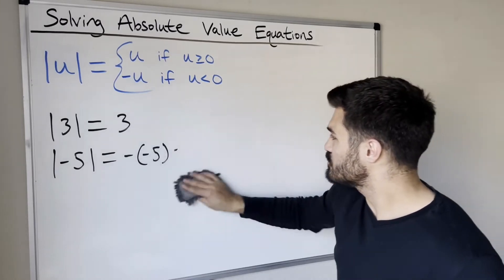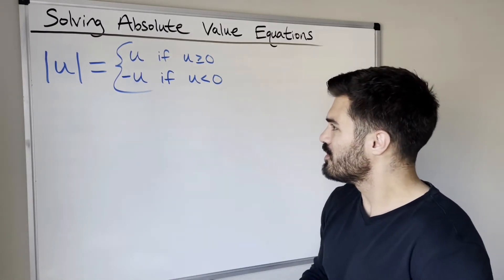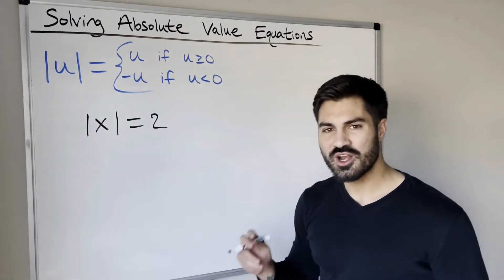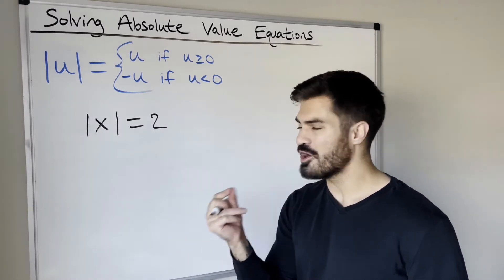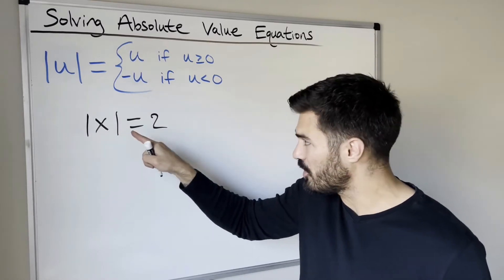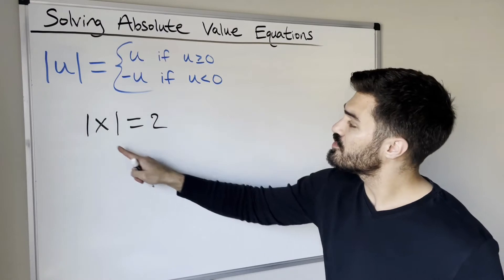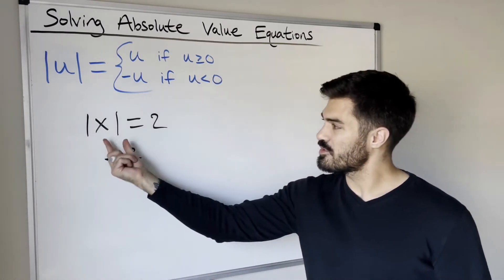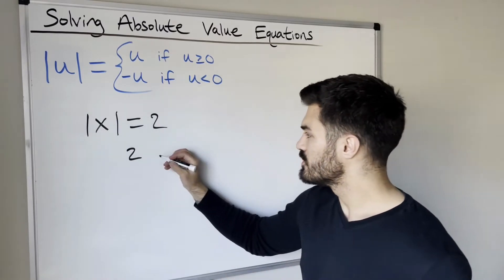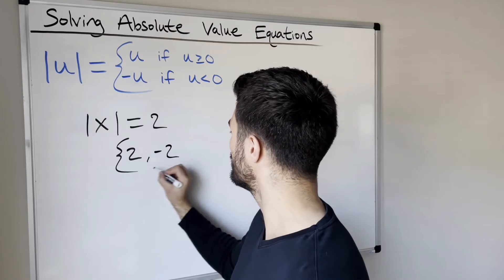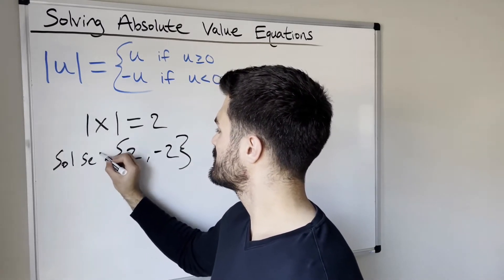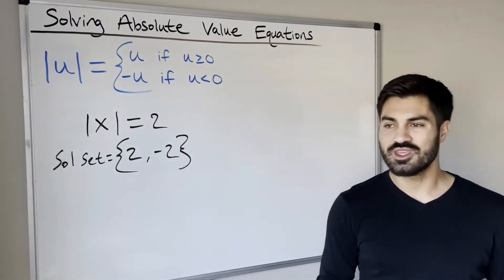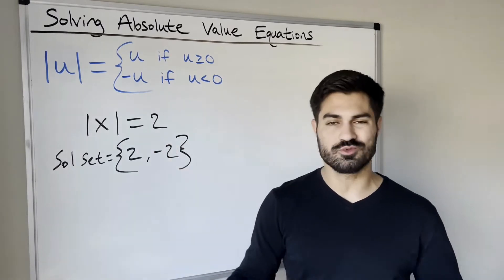Now let's jump into our first example. How do we solve an absolute value equation? The simplest one: absolute value of x equals 2. We're trying to find all real numbers we can substitute for x that make this a true statement. We know the absolute value of 2 equals 2, so 2 is a solution. But what else can we take the absolute value of and get 2? Negative 2. So we actually have two solutions — our solution set is {2, -2} — because the absolute value of either gives us 2. This will be the most common outcome: two solutions.